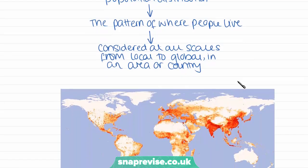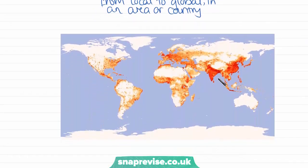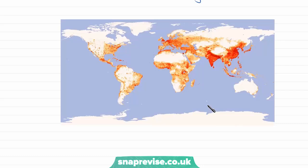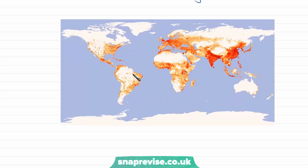Looking at a map of global population distribution and density, we can see that population distribution is uneven across the world — if it were even, the whole map would be one colour. However, we have areas of bright red such as in India and China where there are really high population densities, and white areas where very few or no people live at all. Population density varies both within countries and across the world.